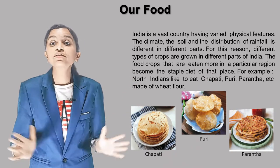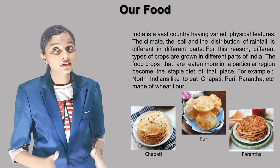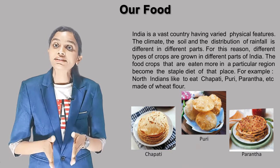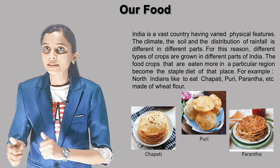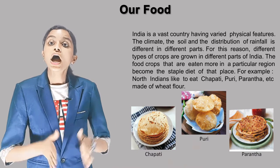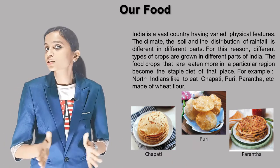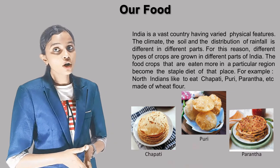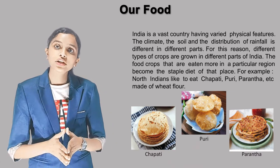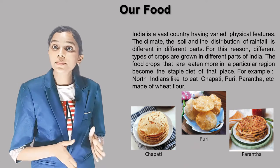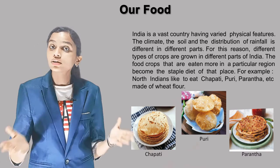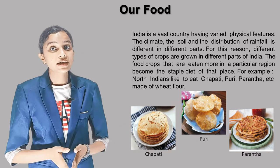India is a vast country having varied physical features. The climate, the soil, and the distribution of rainfall are different in different parts. For this reason, different types of crops are grown in different parts of India. The food crops that are eaten more in a particular region become the staple diet of that place.